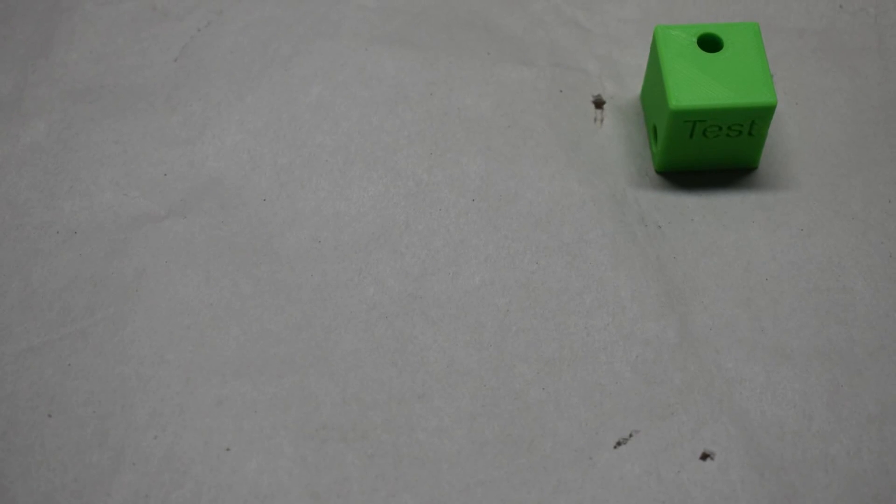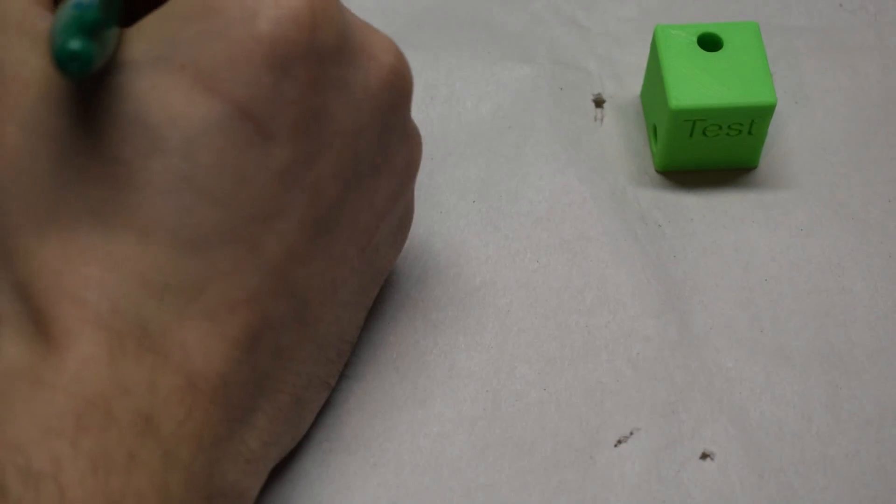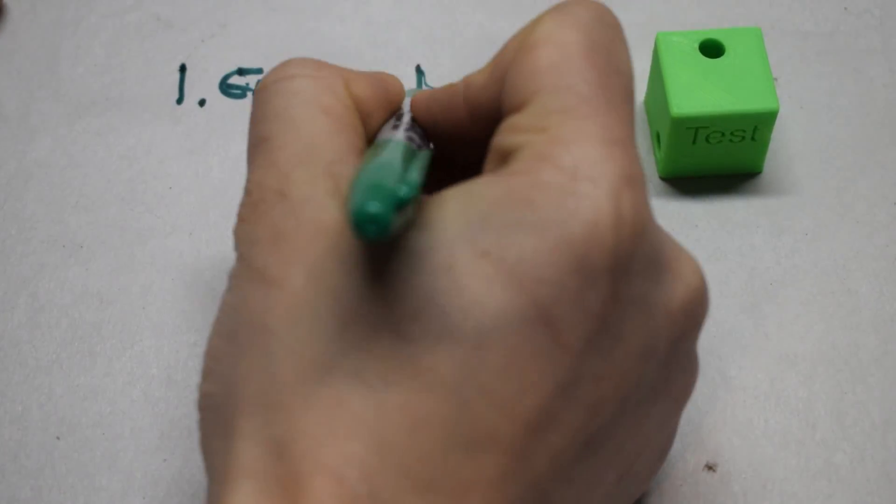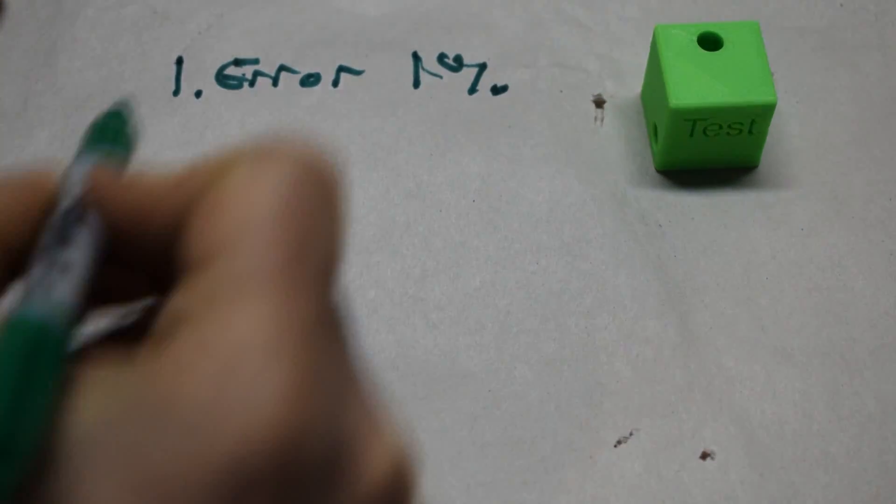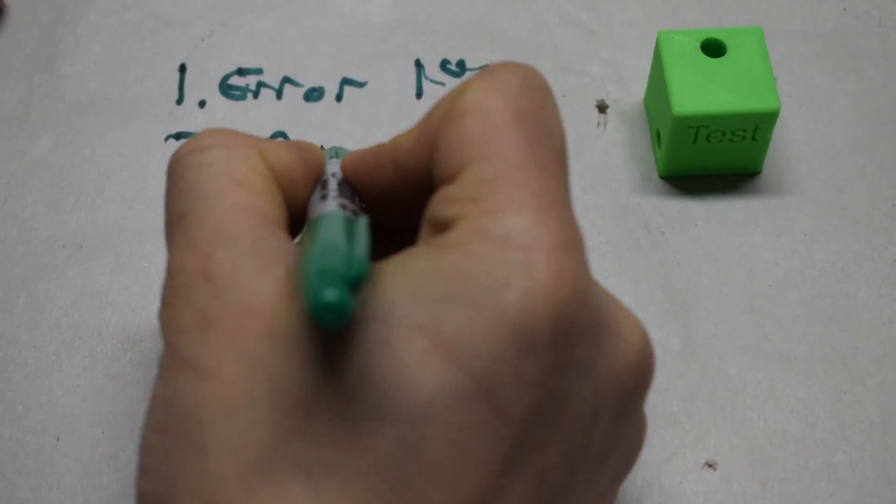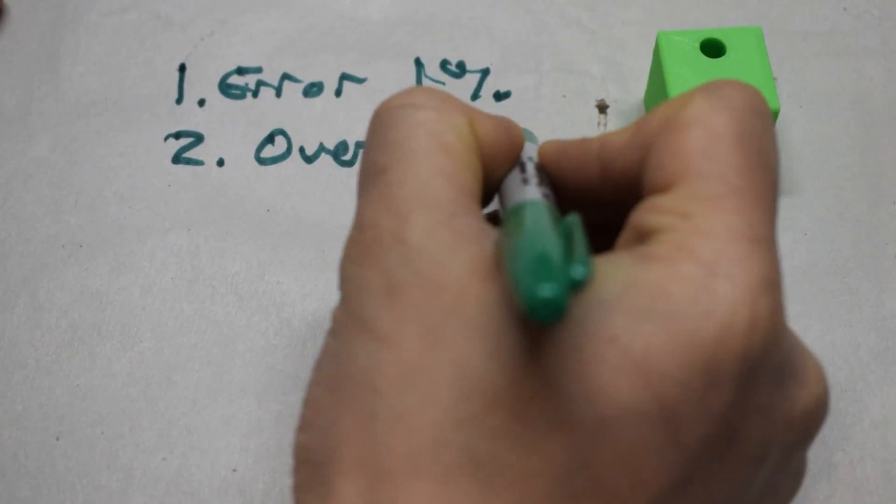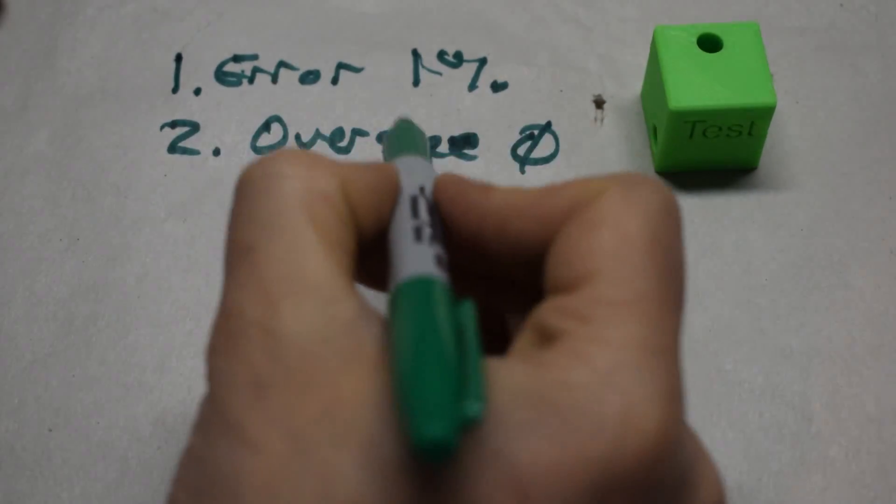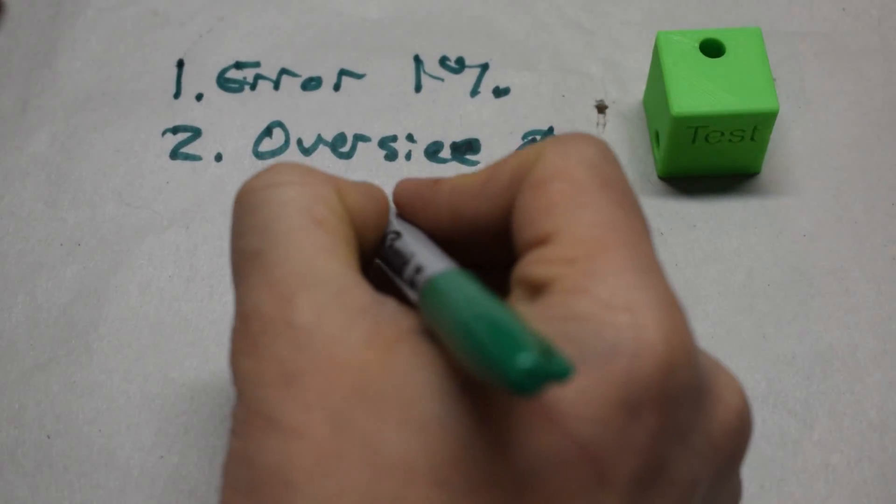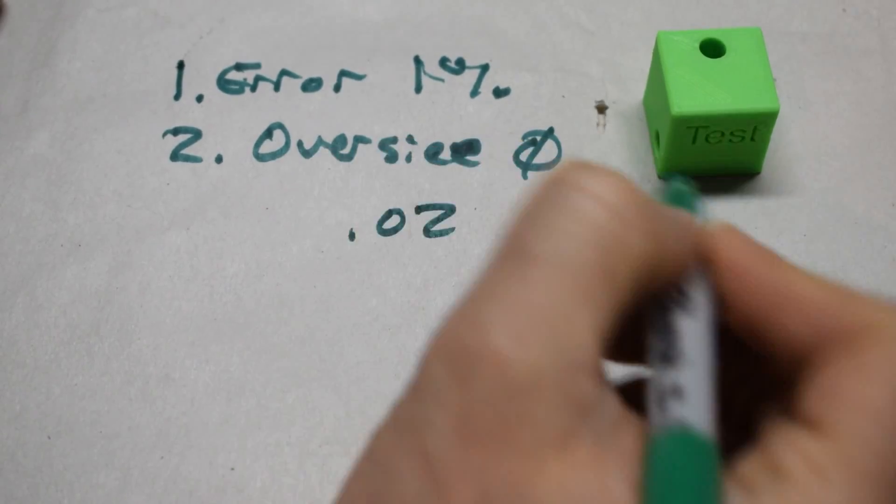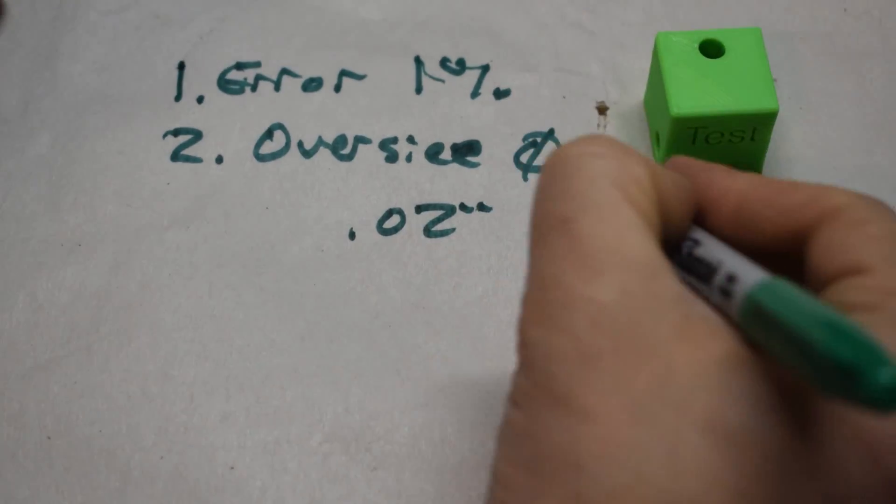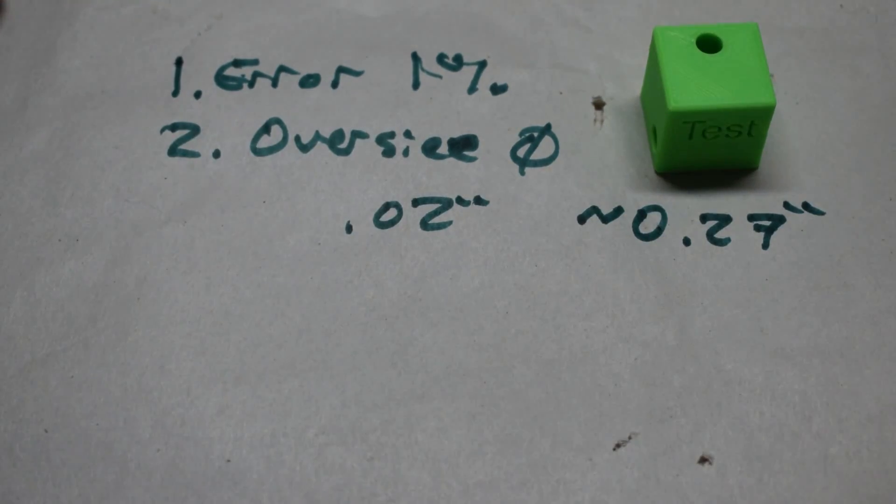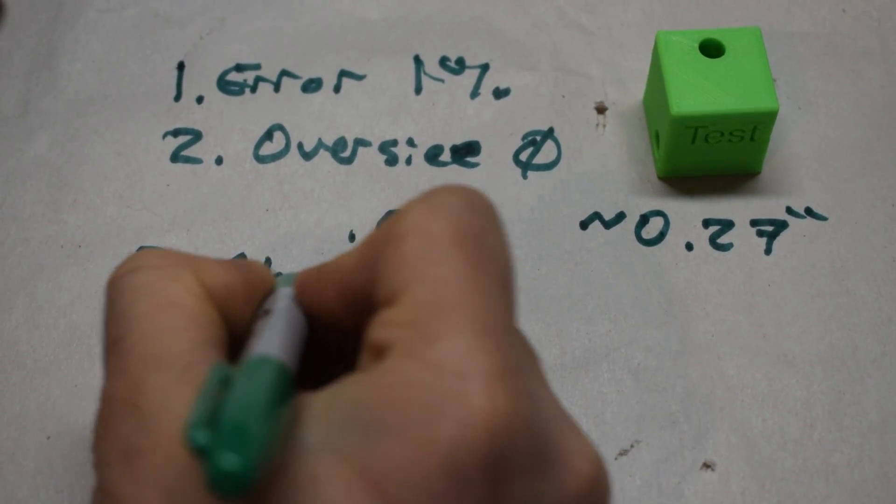Let me go over a couple of recommendations to help you get a successful 3D print. Number one: expect about 1% error in anything you print. Number two: oversize your holes. Even when we tried to dial in those diameters, we still didn't hit exactly what we wanted. If you need a good clearance fit for your through holes, I recommend at least 0.02 inches oversize. So if you're trying to fit a quarter inch bolt, that means about 0.27 inches. Three: chamfers on the build plate.